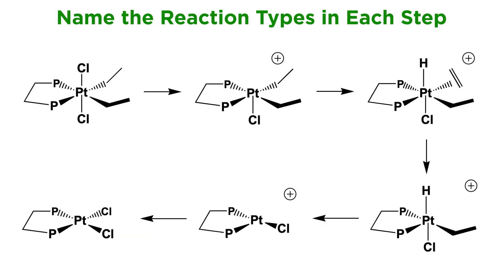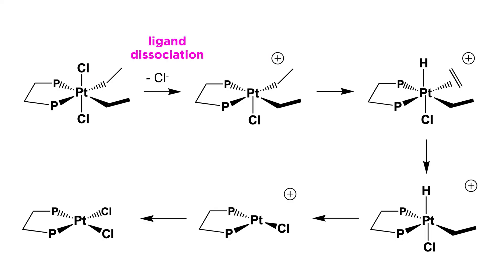With a few types of organometallic reactions understood, let's quickly look at a simple mechanism and make sure we can explain what's happening. We begin with this platinum complex. What's happening in this first step? It looks like one chlorine ligand has been lost, and the resulting complex has a formal positive charge, so this would be ligand dissociation.